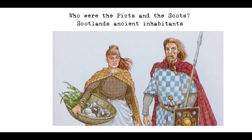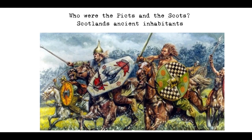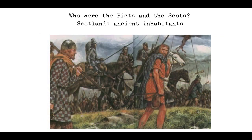They were also skilled farmers and herders, and their economy was based on agriculture and livestock. Despite their differences, the Picts and Scots eventually came to merge and form the Kingdom of Alba. This union was facilitated by political developments in the 12th century, which saw the spread of the English language and the growth of the burghs, or small urban communities. These communities attracted immigrants from England, France, and Scandinavia, and many Gaelic speakers became assimilated into the new social system and its language.